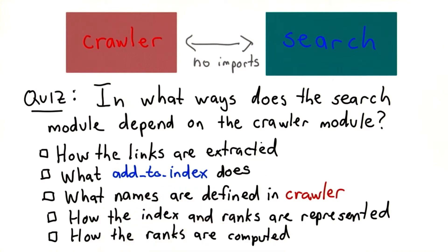The choices are: how the links are extracted, what add to index does, what names are defined in crawler, how the index and ranks are represented, and how the ranks are computed.